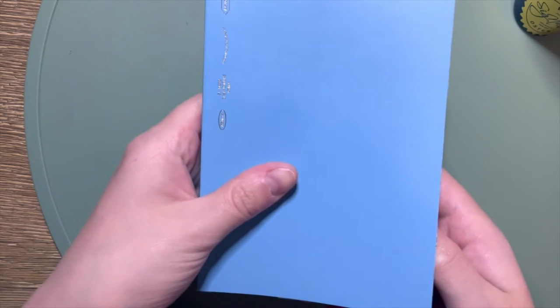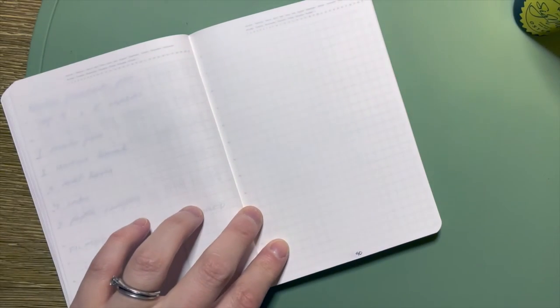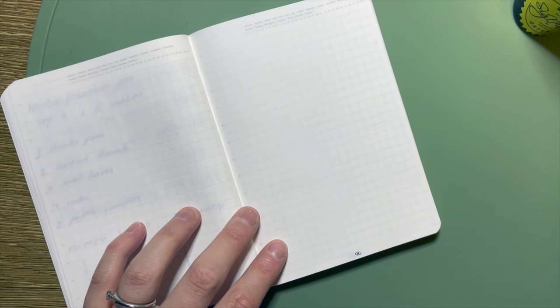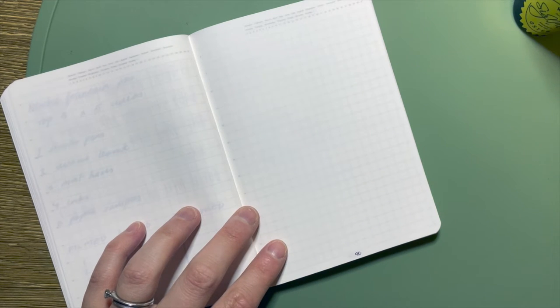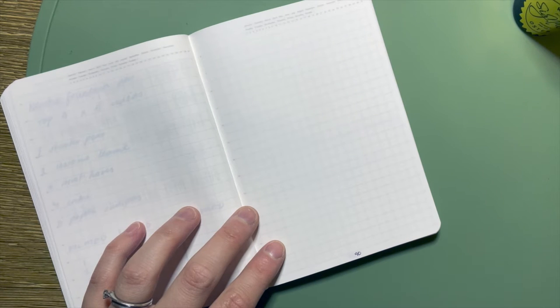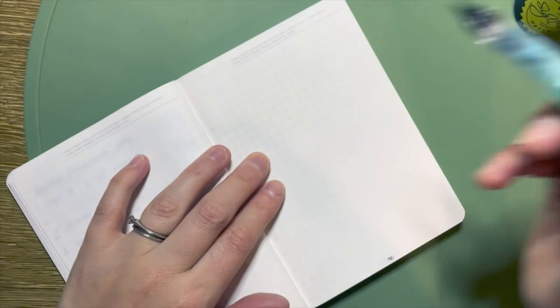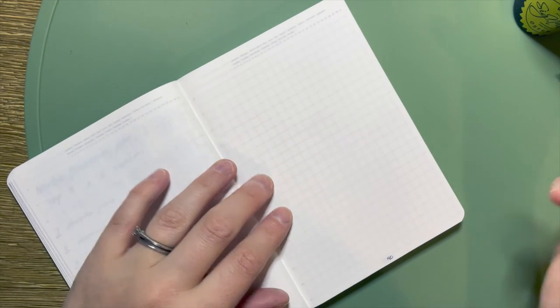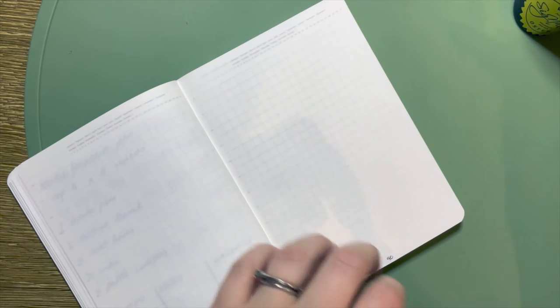Number two on my list, and this is definitely biased because these are the notebooks that I use. Some would argue it's actually not the most fountain pen friendly, but it's Stalogy paper. It's really really thin paper, it's got a great sound to it. It does get a lot of ghosting, this paper, but I love it as a writing experience. I love the way the pen feels across the page. It's just the right amount of feedback for me, not too much.